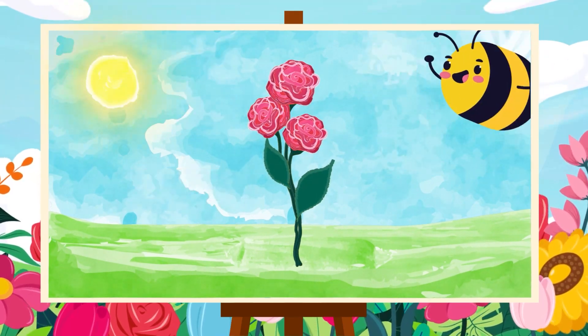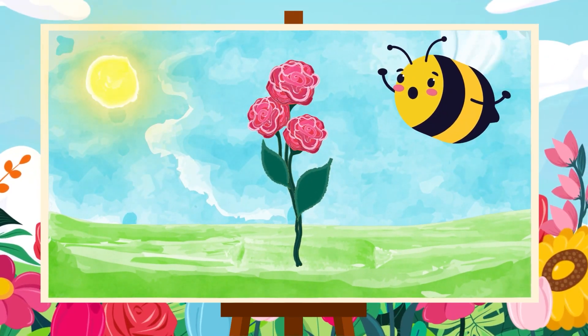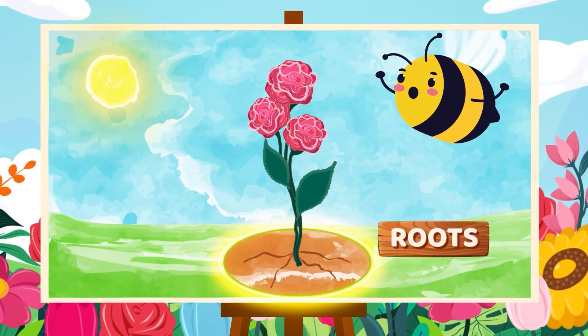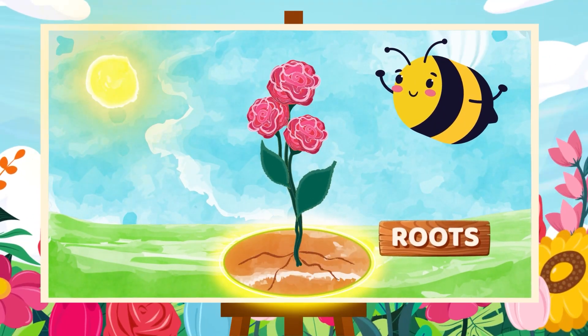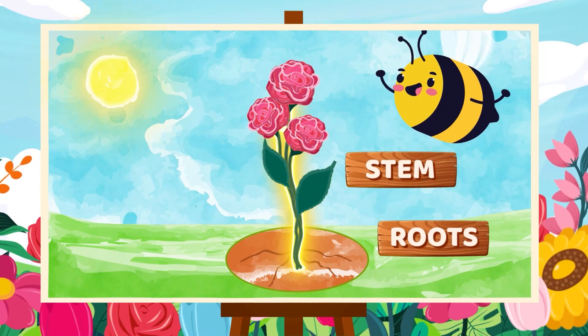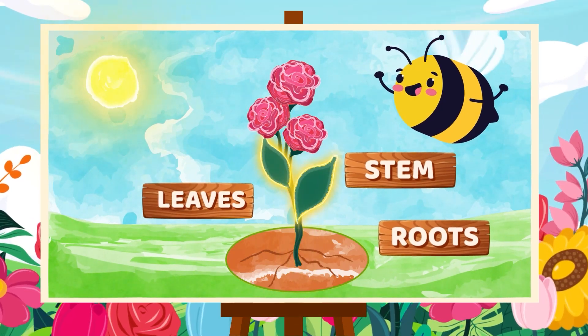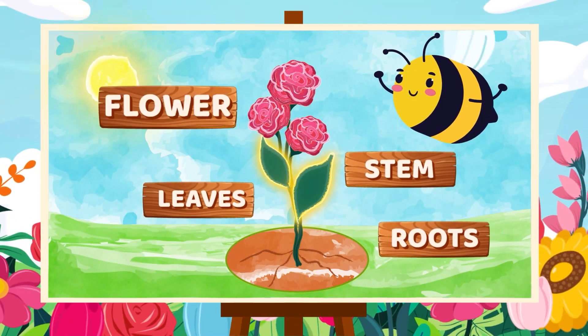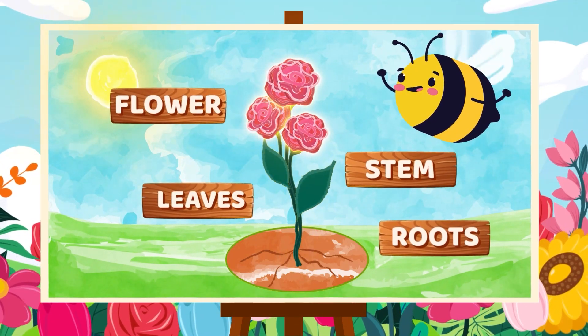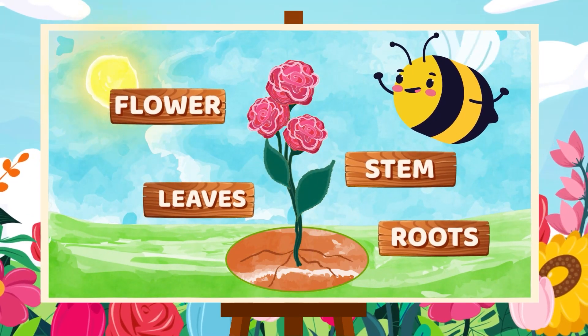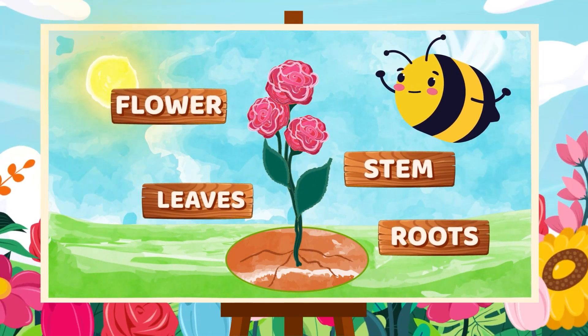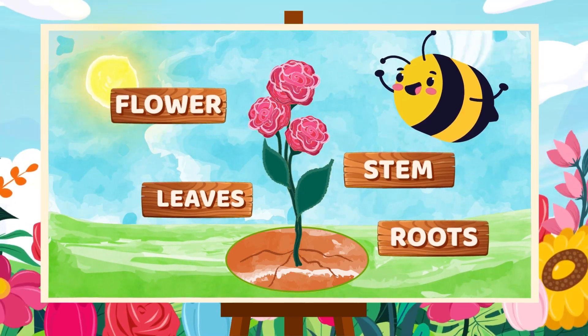Let's review: roots, stem, leaves, flower — and these are the basic parts of a plant.